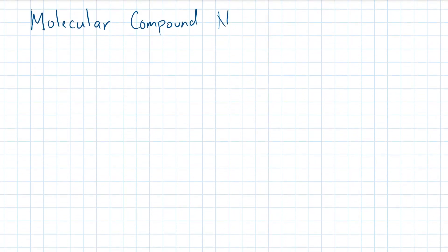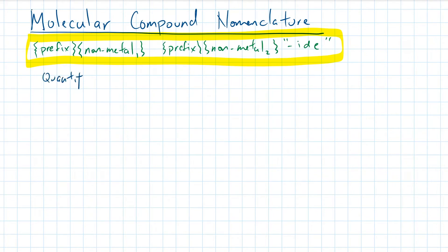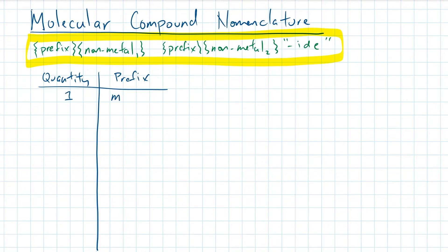The naming system of nonmetals bonding together is completely different than ionic compounds. Since two nonmetals can bind together in many different ratios, the naming convention has to give a count of the quantity of each nonmetal using Greek prefixes. For a count of one, we use the prefix mono. For a count of two, di.